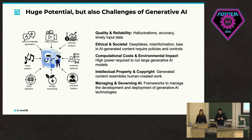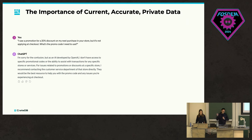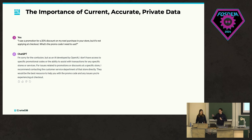There's also some environmental impact. But the key thing we want to talk about today is quality and reliability — with the importance of current, accurate, and also private data that is not available publicly. Because all of these foundational models have been trained on public data: what's in GitHub, what's on the internet, what is in the documentation. Yesterday I watched a presentation with a clear message to everyone writing docs — we are responsible for what these models tell us.